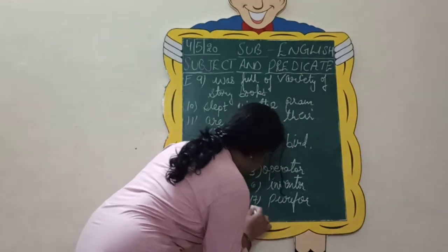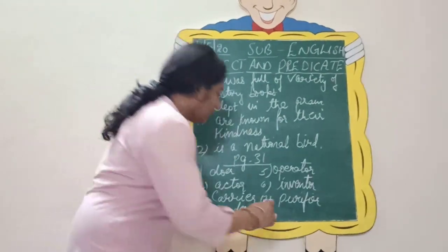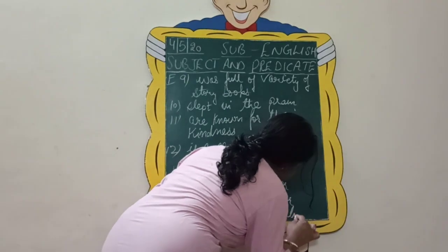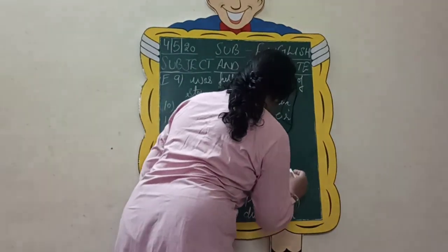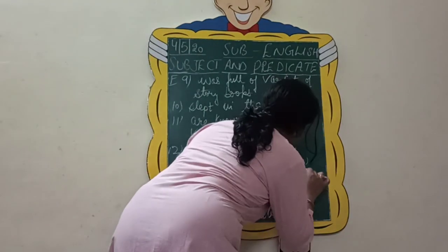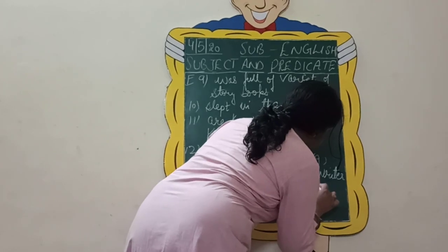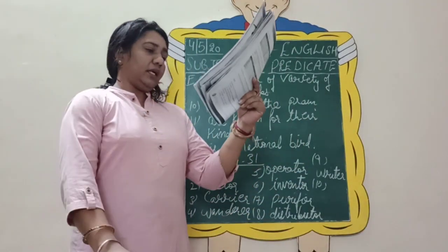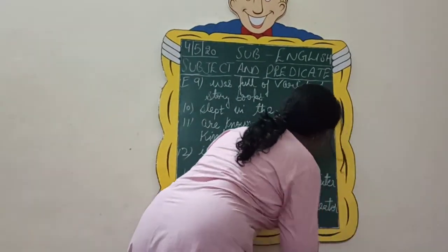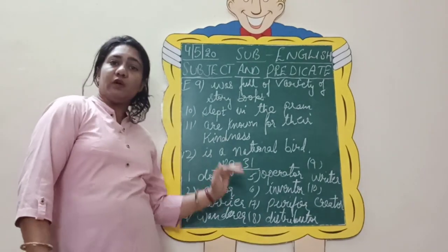Number 8: 'distribute' becomes 'distributor' — one who distributes goods. Number 9: 'write' becomes 'writer' — one who writes stories or poems. Number 10: 'create' becomes 'creator' with -or. This is how we transform verbs into nouns by adding suffixes like -er, -or, or -ier. Exercise B — fill in the blanks by adding a prefix or suffix — was already discussed, so we are not going to revisit it.